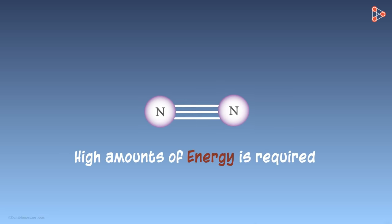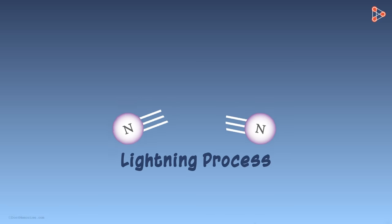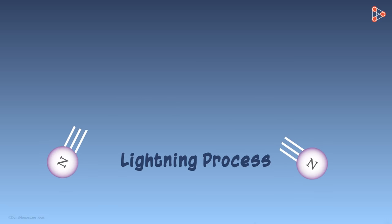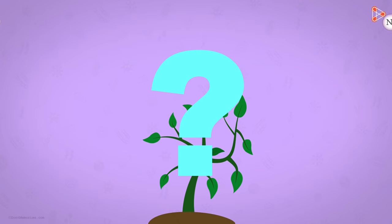It requires extremely high amounts of energy. One instance occurring naturally is the lightning process which helps break the two atoms apart. But that doesn't always help. So the problem still exists. Even plants cannot take in nitrogen directly from the air. So now who will solve this problem?